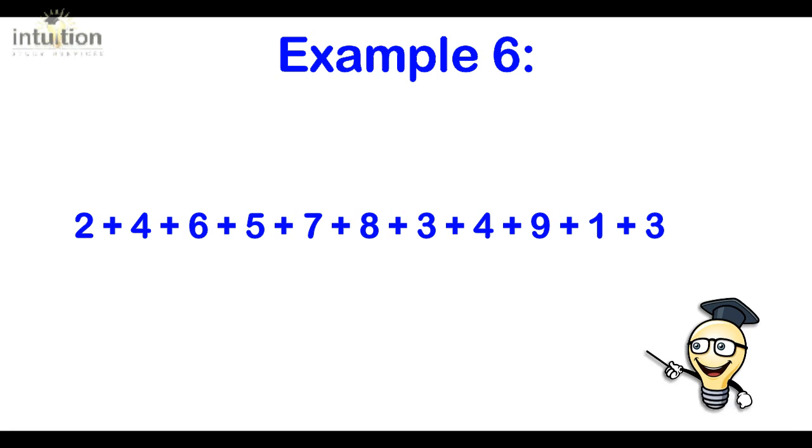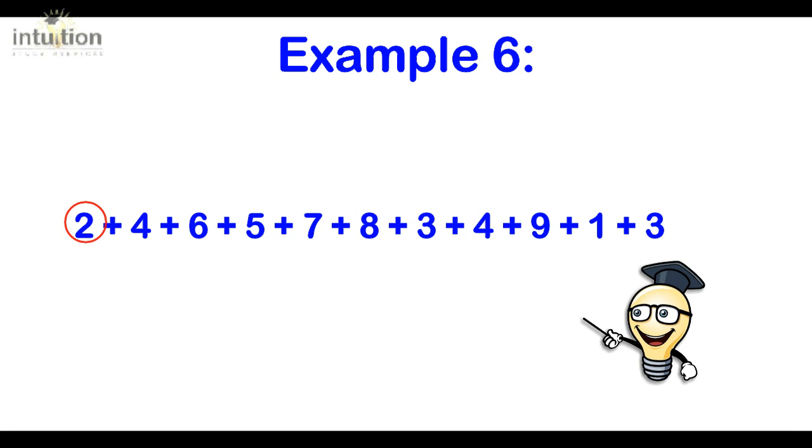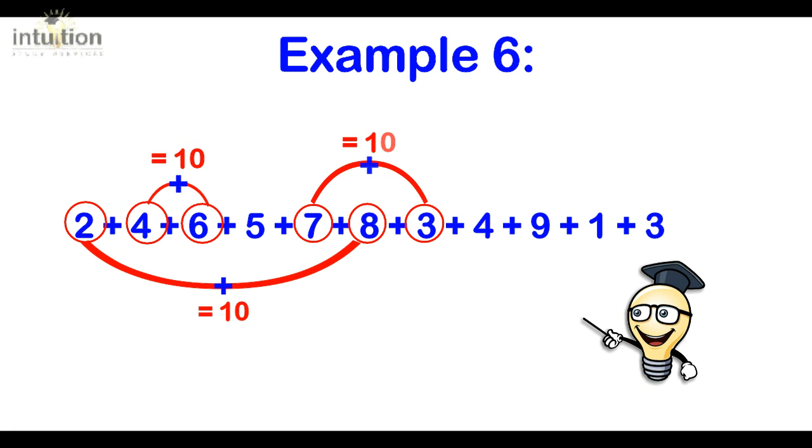Let's look at the easy numbers that complement together first. 2 and 8, that's 10. Then we've got 4 and 6, that's another 10. Then we've got 7 and 3, that's another 10. Then we've got 9 and 1, that's another 10.